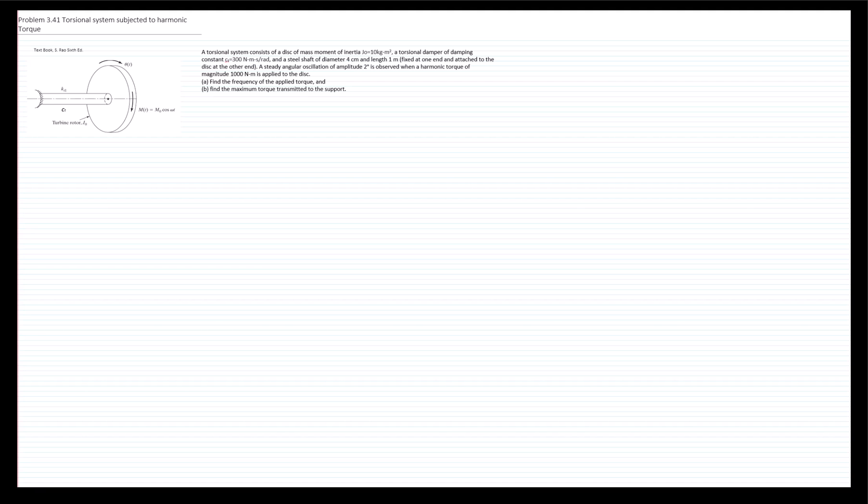This is problem 3.41, which is a torsional system subjected to harmonic torque. We have a torsional system consisting of a disk of mass moment of inertia of 10 kilograms meters squared, a torsional damper of damping constant equals to 300 newton meters second per radian. The shaft is made out of steel with a diameter of 4 centimeters and a length of 1 meter, and it's fixed to an end as shown in the figure. We have a steady angular oscillation that's observed when the harmonic torque of magnitude 1000 is applied.